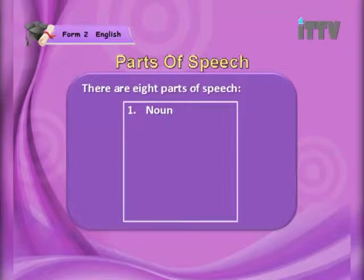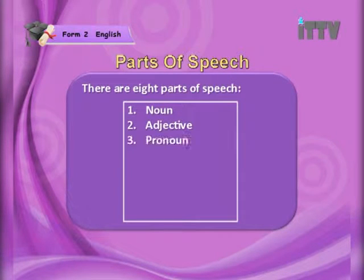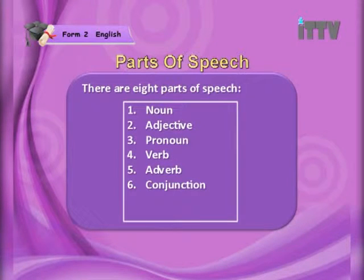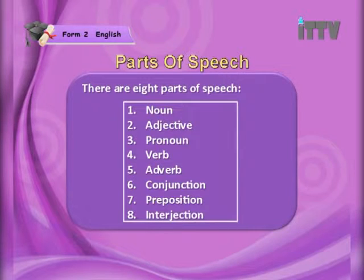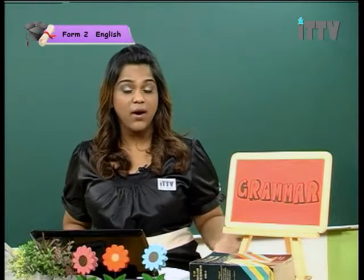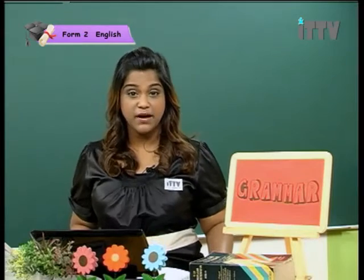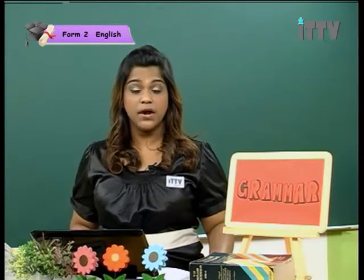Now, there are 8 parts of speech: noun, adjective, pronoun, verb, adverb, conjunction, preposition and interjection. Now what are all these parts of speech about? Let's go through it one by one. Let's start with nouns.